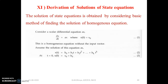Now let us derive the solutions of the state equations for both homogeneous and non-homogeneous cases. The solution is obtained by considering the basic method for the homogeneous equation. Consider a scalar differential equation: dx/dt = ax, with initial condition x(0) = x₀. Assume the solution is given by x(t) = b₀ + b₁t + b₂t² + ... + bₖtᵏ. At t = 0, x(0) = x₀, hence b₀ = x₀.